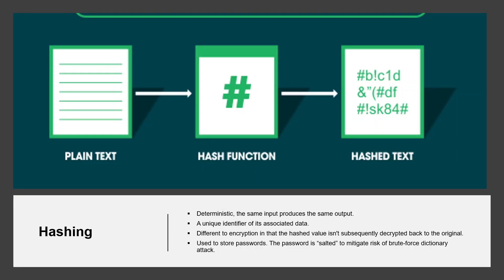Now let us learn about hashing. Hashing uses an algorithm to convert the original text to a unique fixed-length hash value. Each time the same text is hashed using the same algorithm, the same hash value is produced. That hash can be used as a unique identifier of its associated data. Hashing is different to encryption in that it doesn't use keys and the hashed value isn't subsequently decrypted back to the original.